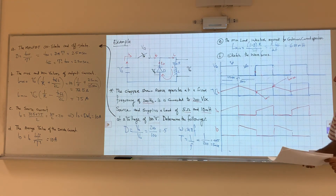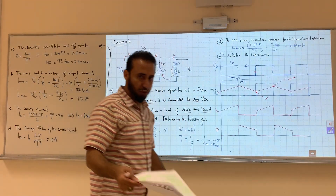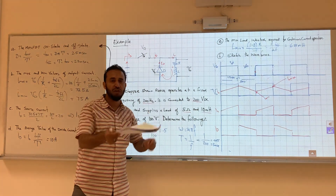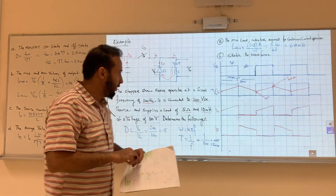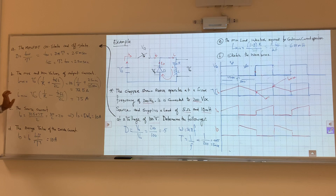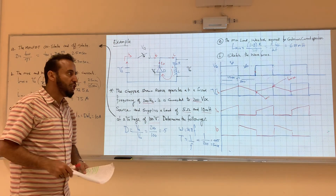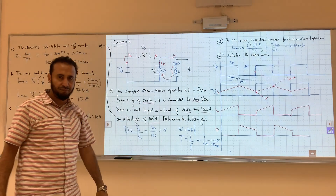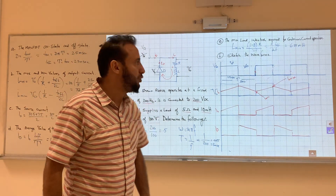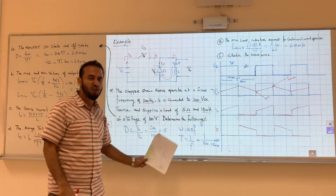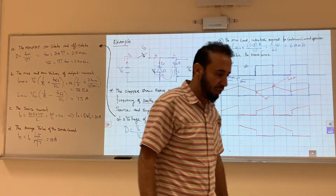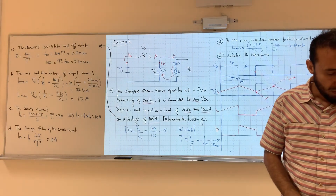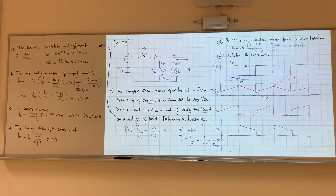This is a buck converter example. If you assume a boost converter instead with the same questions, just use the boost equations — the duty cycle equation, the I_max and I_min equations for boost. I can give you the same questions with a buck or a boost and vary the values. You will definitely see something like this on your final exam, so make sure you practice. Thank you.